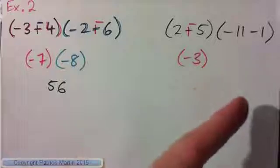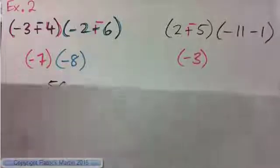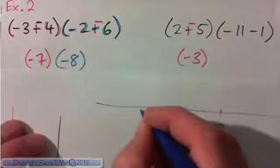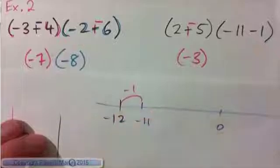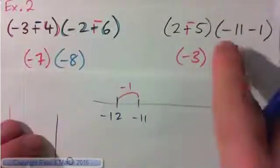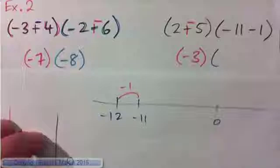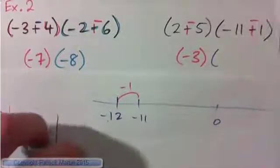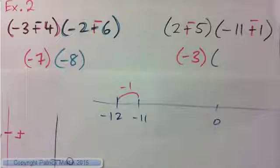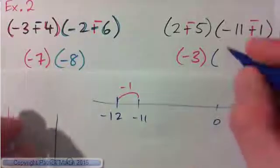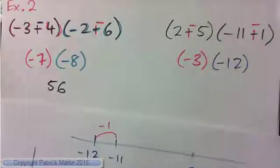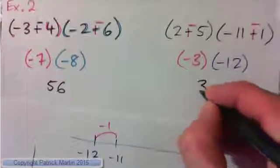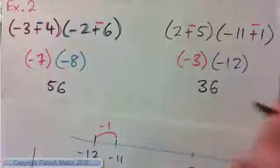Now this one: negative eleven minus one. I'm at negative eleven, I go back one, leaves me at negative twelve. Or I'm in debt by eleven dollars, I spend a dollar, now I'm in debt by twelve. Or change that to plus negative: eleven negatives plus one negative is twelve negatives. So now we have negative three times negative twelve. Negative times negative is positive, and three times twelve is thirty-six.